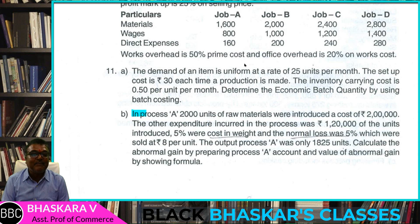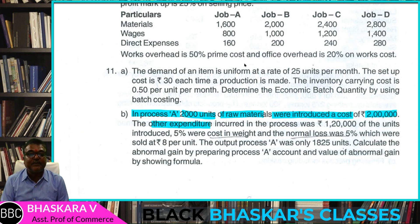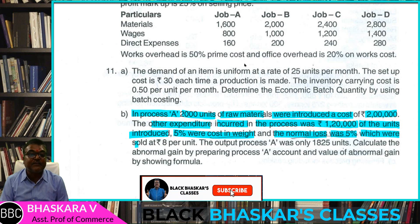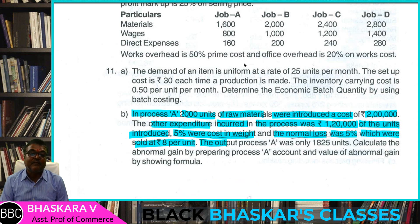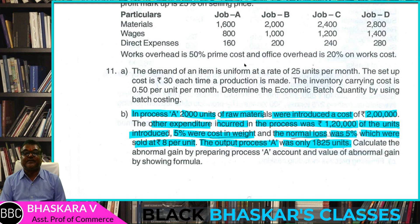In Process A, 2,000 units of raw materials were introduced at a cost of Rs. 2,00,000. Other expenditure incurred in the process was Rs. 1,20,000. Of the units introduced, 5% were lost in weight, and the normal loss was 5%, which were sold at Rs. 8 per unit.